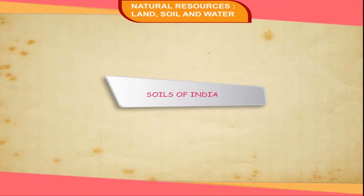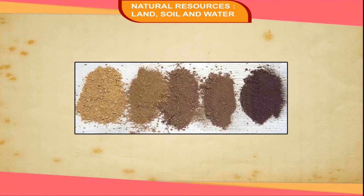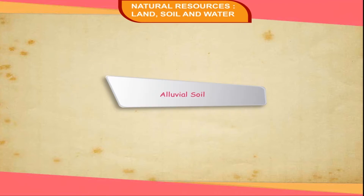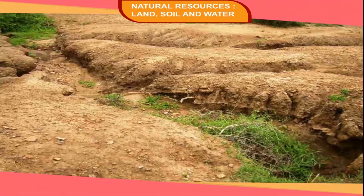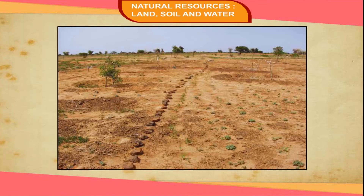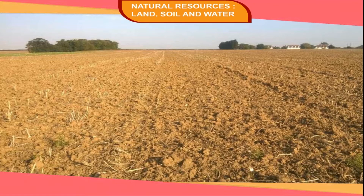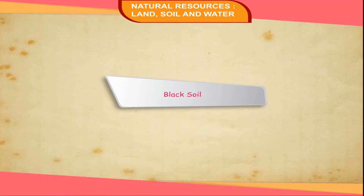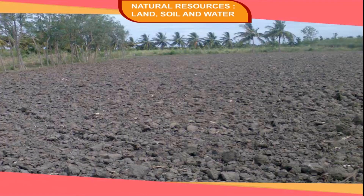Soils of India — these categories of soil are identified in India. Alluvial soil is a very fertile soil and supports the growth of agricultural crops. This kind of soil is found in the northern plains and east coastal plains. It is formed by the deposition of alluvium brought down by the rivers flowing from the Himalayas.